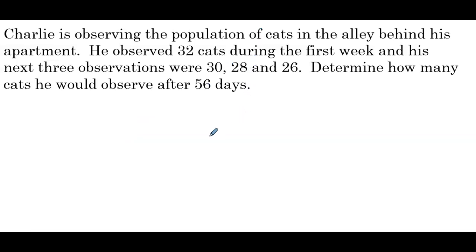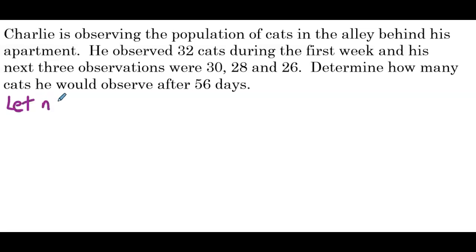Charlie is observing the population of cats in the alley behind his apartment. He observed 32 cats during the first week, and his next three observations were 30, 28, and 26. Determine how many cats he would observe after 56 days. His observations are weekly — first week, second week, third week, fourth week — so we're going to let n be equal to the number of weeks.